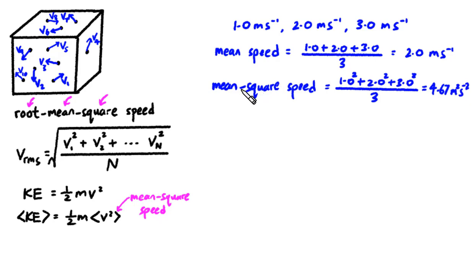So strictly speaking, mean square speed is not even a speed. It doesn't even have the correct units for a speed.